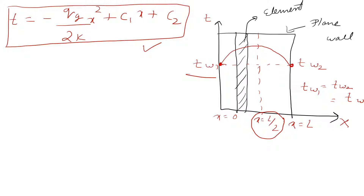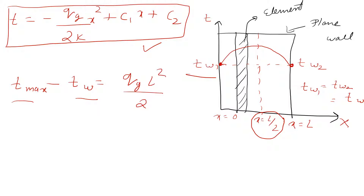Writing the expression for T_max: when we apply the two boundary conditions, the result comes out to be T_max - T_w = q_g·L²/(2k). This gives us the maximum temperature in the plane wall with uniform heat generation.